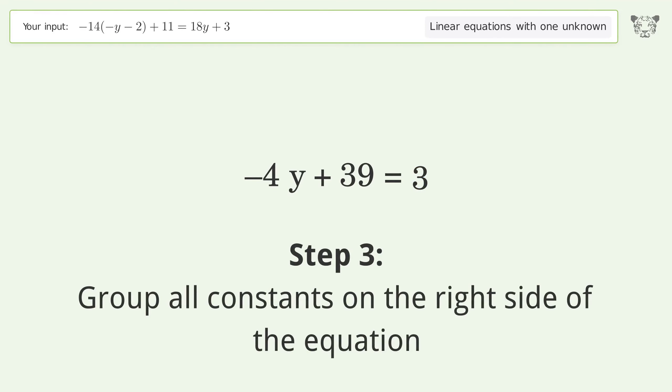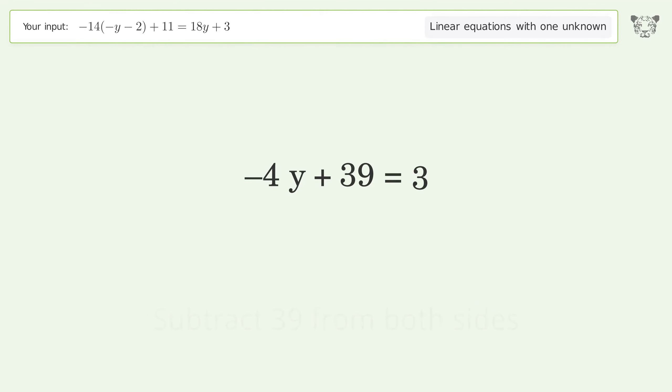Group all constants on the right side of the equation. Subtract 39 from both sides, then simplify the arithmetic.